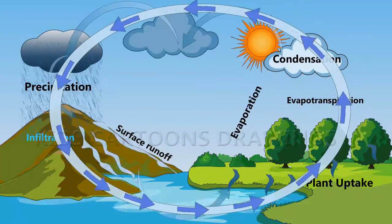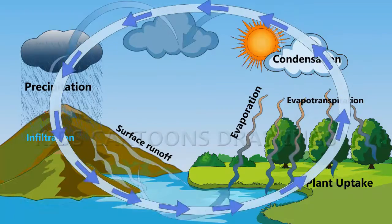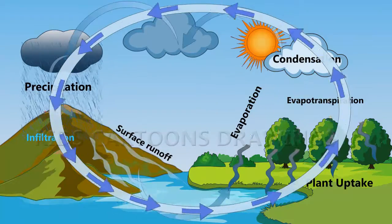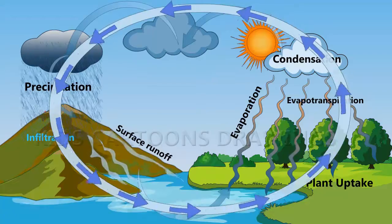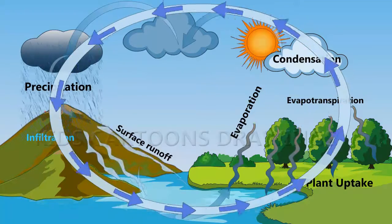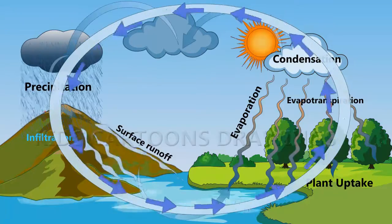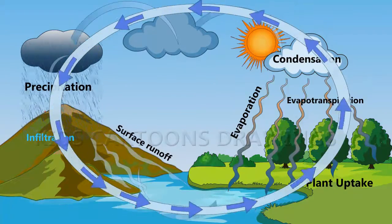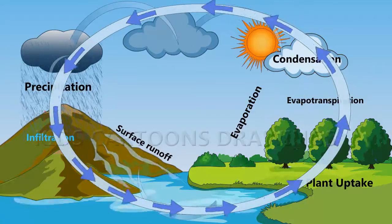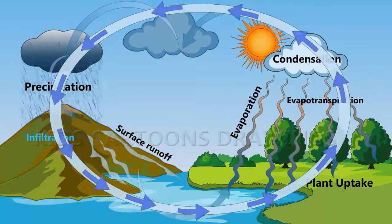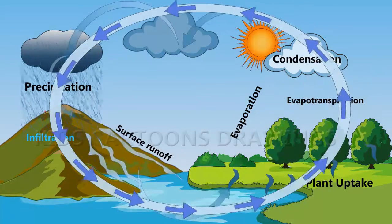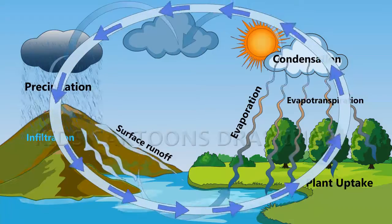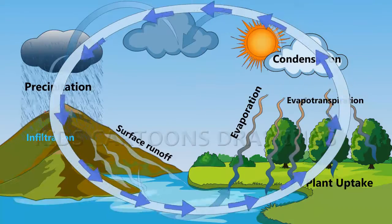Hi friends, today I will explain about the water cycle, also known as the hydrological cycle. This is a cycle that involves the continuous circulation of water in the Earth-atmosphere system.